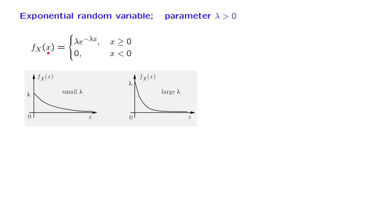This is because if you plug in x equal to 0 in this expression, you get lambda times e to the 0, which leaves you just with lambda. So it starts off at lambda, and then it decays at a rate of lambda. Notice that when lambda is small, the initial value of the PDF is small, but then the decay rate is also small, so that the PDF extends over a large range of x's.